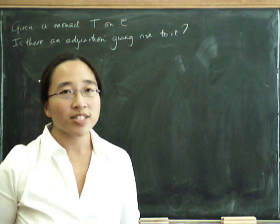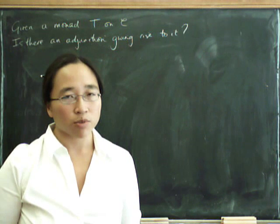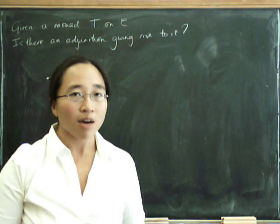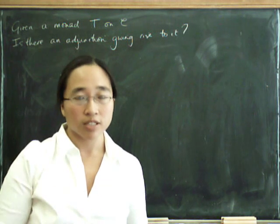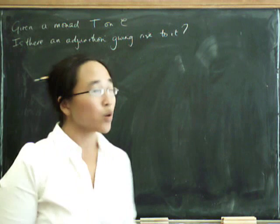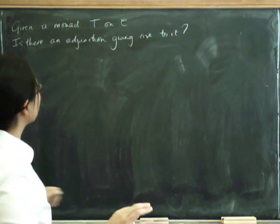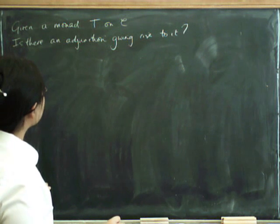Now, we've seen the category of algebras for a monad T. It turns out that this is the terminal object among all adjunctions giving rise to the same monad. We can use this to construct a very nice canonical adjunction that gives rise to this monad.